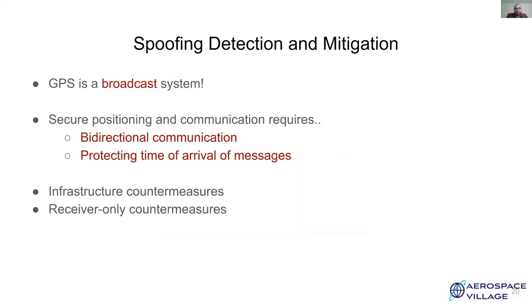GPS is a broadcast system, which means that it is unidirectional. It's a simplex system. There is no way for a receiver to interact or talk back to the satellites. Secure positioning and communication requires bidirectional communication for a secure handshake and for secure exchange of information. And it's also important to protect time of arrival of messages, which in this case is very challenging. Now, there are two types of spoofing detection and mitigation techniques for GPS. First is infrastructure countermeasures, where you need to change the entire infrastructure, which includes cryptographic solutions. And there are receiver end countermeasures, where it's enough just to modify the receiver. Let's look at these one by one.